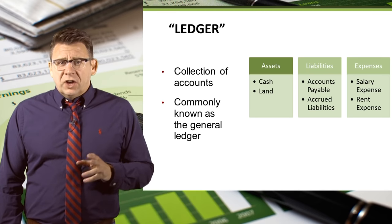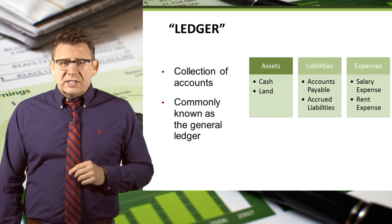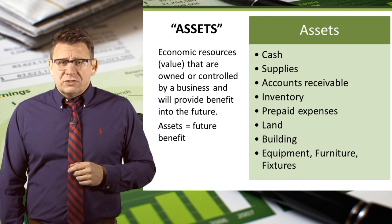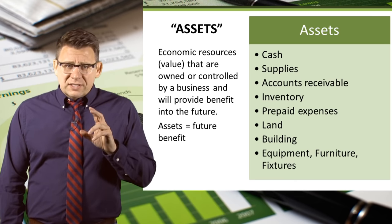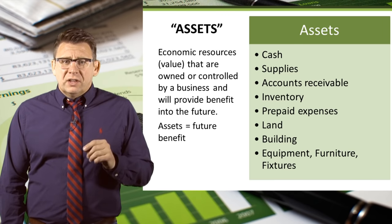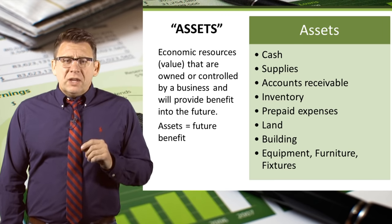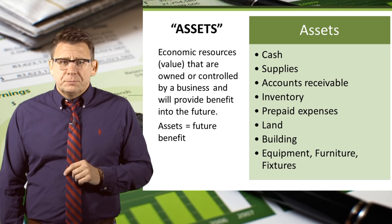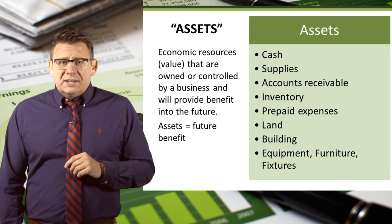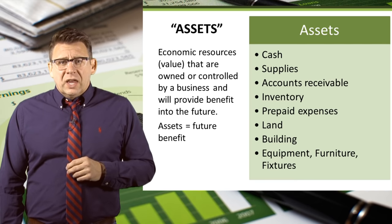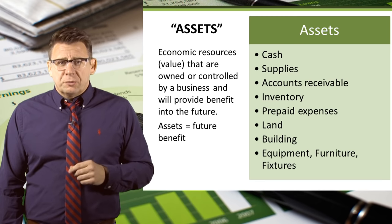Before we end this short video on accounting terms, I'd like to revisit some terms and define the accounts a little better. Assets are economic resources — something of value — that are owned or controlled by a business and will provide benefit into the future. The key when trying to determine if something is an asset is that assets will provide future benefits. Supplies is an asset because we haven't used them yet. When we do, they will become an expense — supplies expense, to be exact — and they will become a past benefit, not a future benefit anymore.